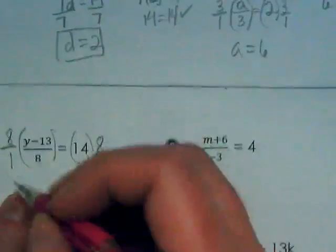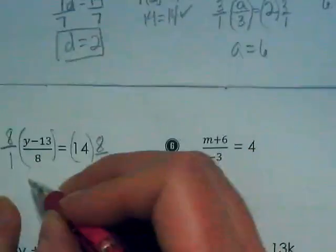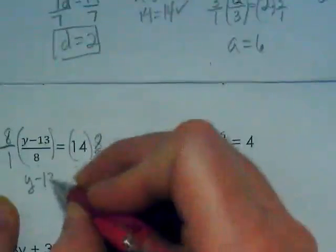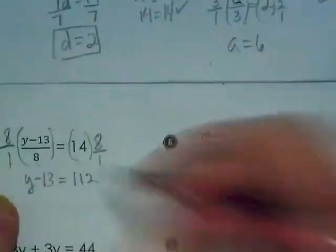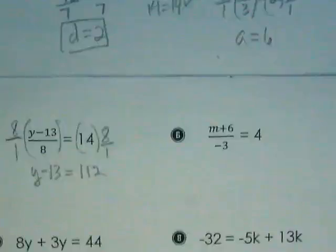That's going to give us y minus 13. Oops, I put a 3 instead of a 13. Is equal to, and I'll just tell you because we don't all have calculators, 14 times 8 is 112. Now you might be thinking, why didn't I distribute that 8?